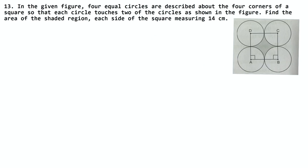Let's do the next question. In the given figure, four equal circles are described about the four corners of a square such that each circle touches two of the other circles. Find the area of the shaded region. Each side of the square is 14 cm.